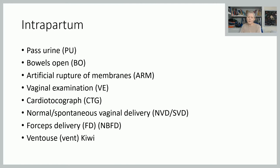Moving to abbreviations used more in labour: PU for passed urine — for both the woman and the baby — and BO for bowels open. Artificial rupture of membranes, written as ARM, is where we have broken the woman's waters, usually as part of an induction process. VE is vaginal examination. The cardiotocograph, or CTG, is the monitoring equipment used to monitor the baby's heart rate and contractions. It has two transducers: one with a pressure pad to pick up contractions, the other to pick up the baby's heart rate, producing an electronic trace readout.